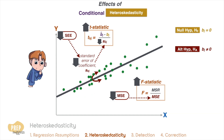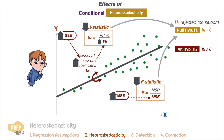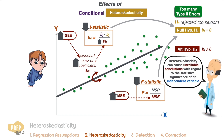If the pattern of heteroscedasticity is in the opposite direction — that is, if the majority of observations have high X values — we reverse all our arguments. Both the t-statistic and F-statistic will be too small, meaning that the null hypothesis is rejected too seldom. In this case, there can be too many Type 2 errors. As you can see, heteroscedasticity can cause unreliable conclusions with regard to the statistical significance of an independent variable.